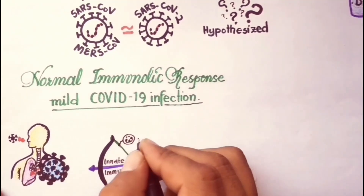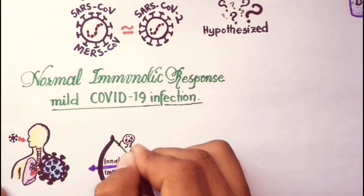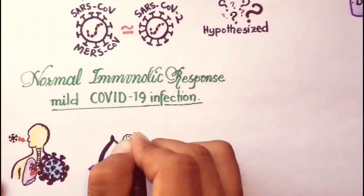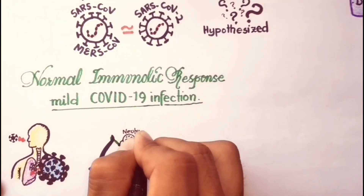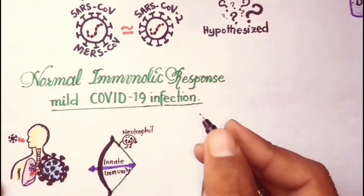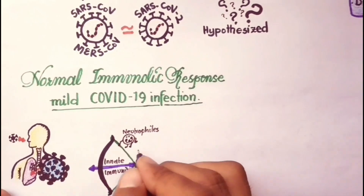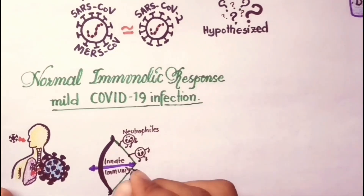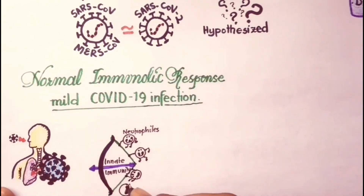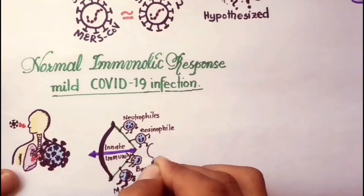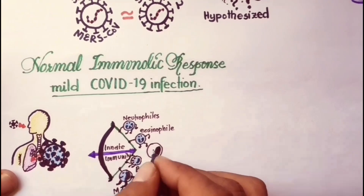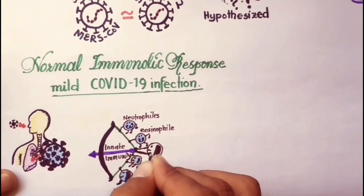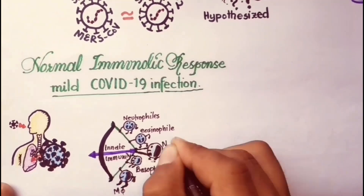Innate immune defense involves several cell types, including leukocytes such as neutrophils, eosinophils, basophils, monocytes, macrophages, lung epithelial cells, mast cells, and natural killer cells.